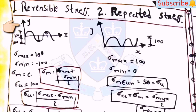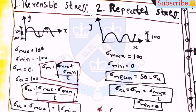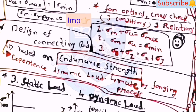From this topic, mostly one question is asked every year for reversible or repeated stress. For reversible stress: sigma_m = (sigma_max + sigma_min)/2 and sigma_a = (sigma_max − sigma_min)/2; sigma_a = sigma_max = sigma_min and sigma_m = sigma_min = 0. For repeated stress: sigma_max = 100, sigma_min = 0, so sigma_m = 50 and sigma_a = 50, i.e., sigma_a = sigma_m = sigma_max/2. For checking: sigma_m + sigma_a = sigma_max, sigma_m − sigma_a = sigma_min.